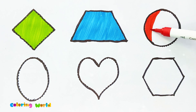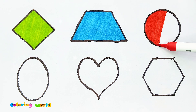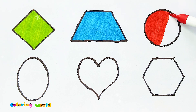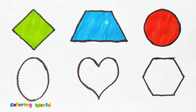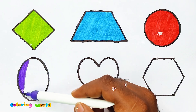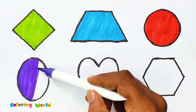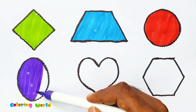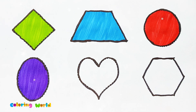Circle — red color. Circle shape. Oval — purple color. Oval shape.